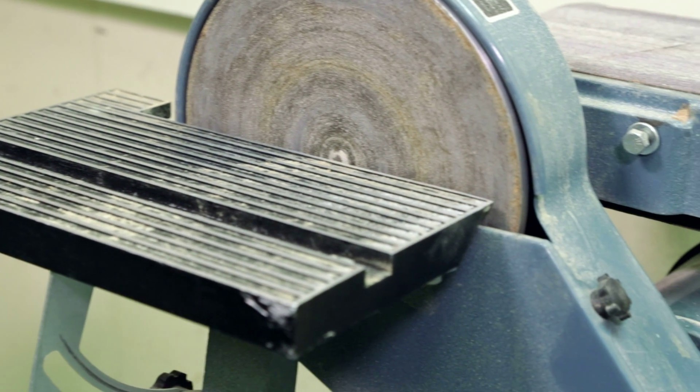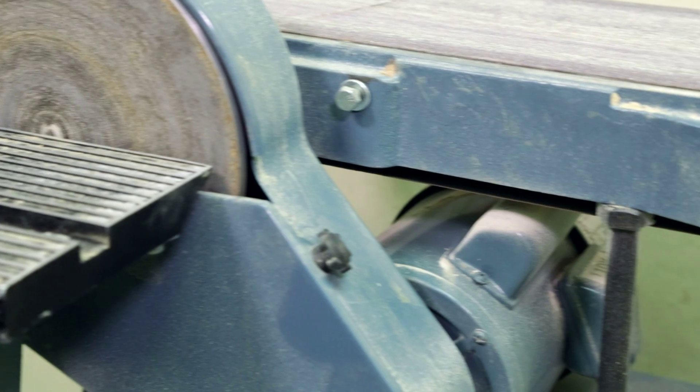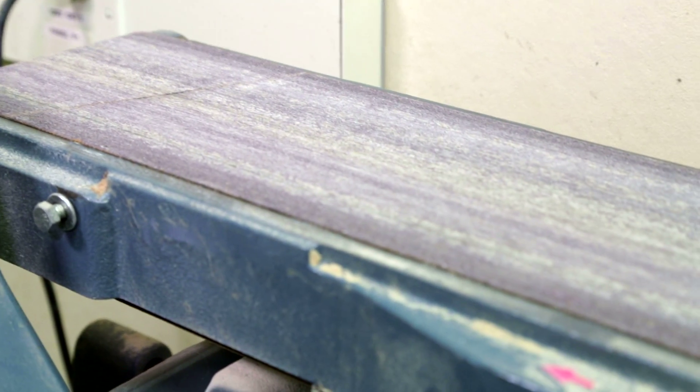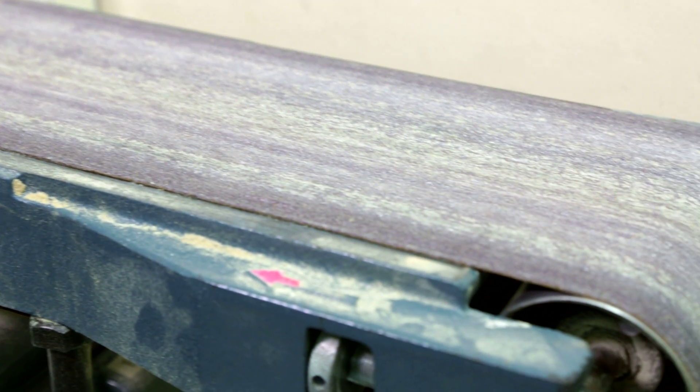The sander is a tool used to smooth edges and round corners. This machine is a combination sander featuring both a sanding belt and a sanding disc. Let's review some of the major parts.